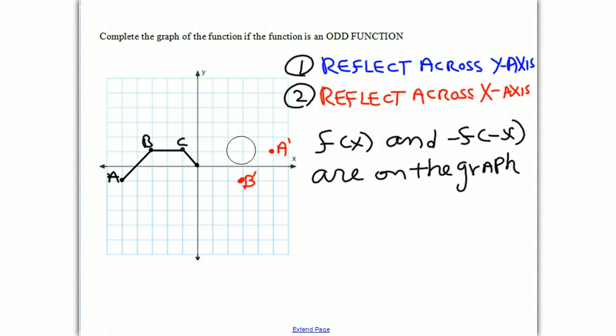Let's look at C. At C, this point is at negative 1, 1. If we reflect across the y-axis, it goes to 1, 1. And then if we reflect that point across the x-axis, instead of being one unit above the x-axis, it would be one unit below. And there's our corresponding point for C. We'll call it C prime.